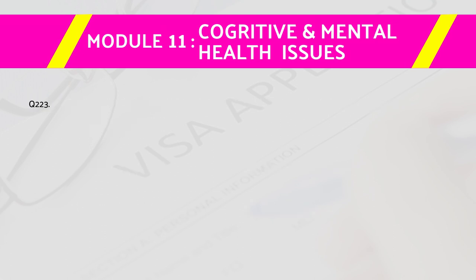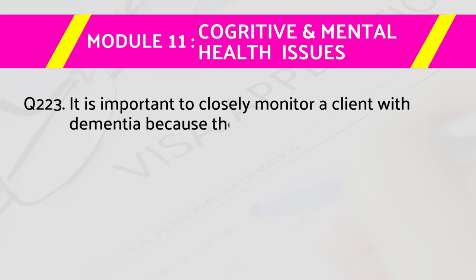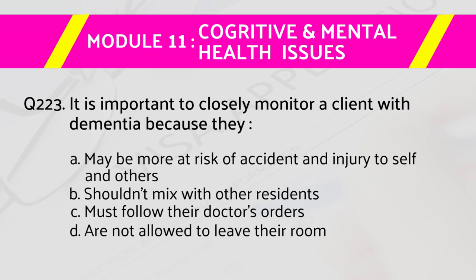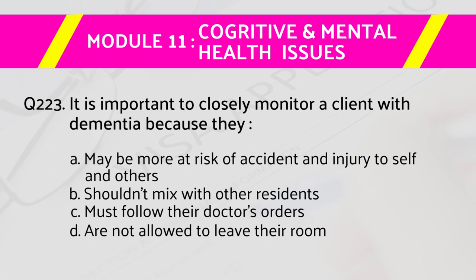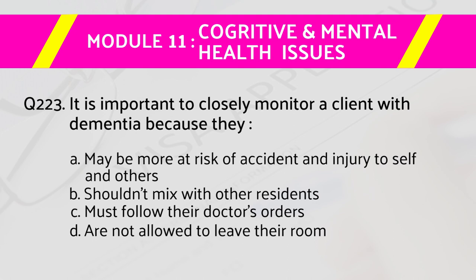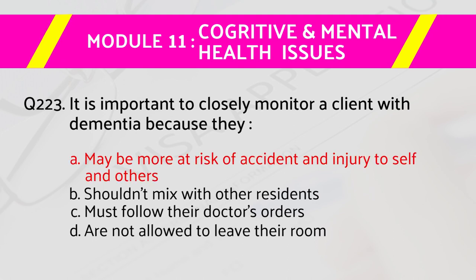Question number 223: It is important to closely monitor a client with dementia because — answers are: a) they may be more at risk of accident and injury to self and others, b) they should not mix with other residents, c) they must follow their doctor's orders, d) they are not allowed to leave their room. The right answer is a) they may be more at risk of accident and injury to self and others.